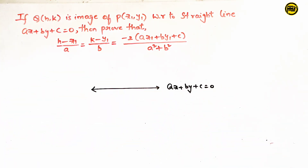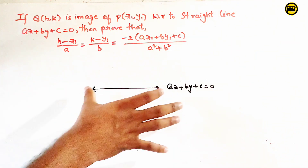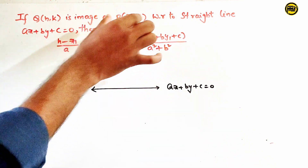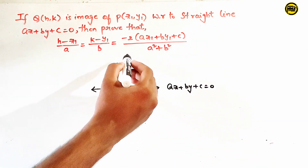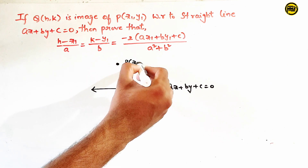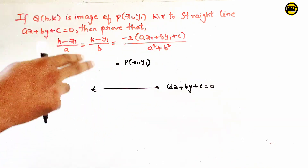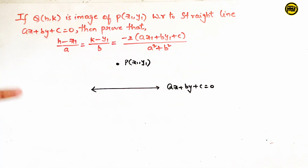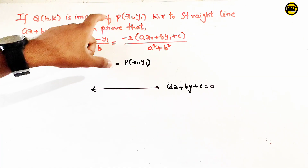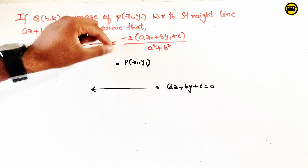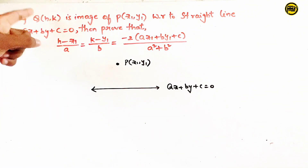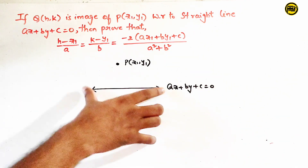Any linear equation in two variables represents a straight line in 2D geometry. Let us consider the straight line. On one side we have a point P of coordinates x1, y1, and Q of coordinates h, k is the image of point P with respect to this straight line.